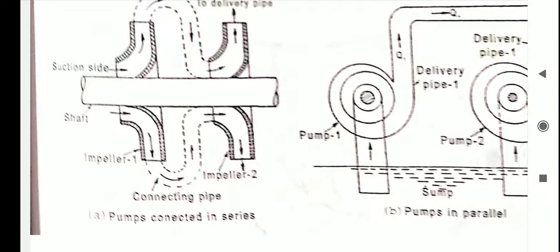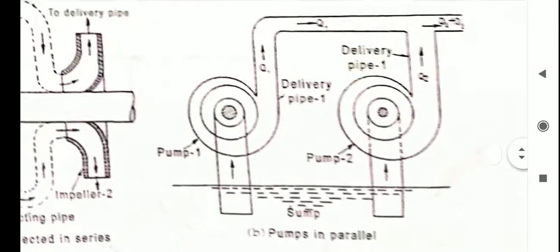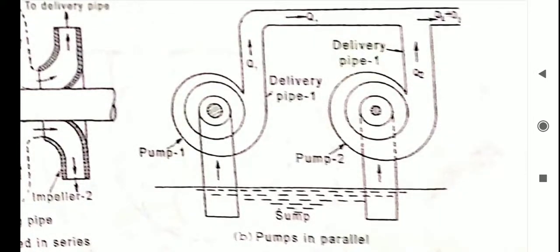The second type is pumps in parallel. In order to obtain large discharge, the pumps are connected in parallel. As you can see from this figure, each pump lifts the same water from the common sump and delivers to a common pipe. Each of the pumps works against the same head.